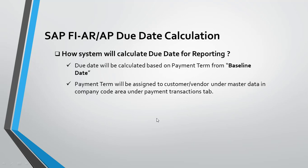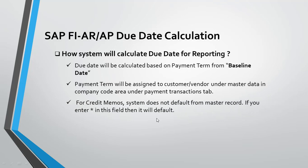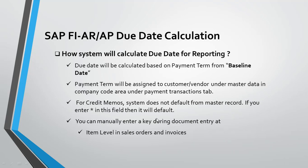For credit memos, the system does not default the payment term from the master record, so you need to enter it when you are creating the credit memo in the payment term field. Then the system will automatically default it from the master data. You can also manually enter the payment term key during document entry. This can be added while creating sales items, orders, and invoices in FI, as well as header items in purchase orders and invoices.